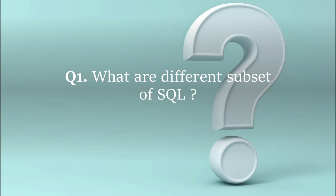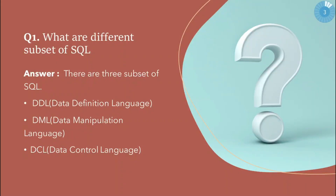The first question is: what are the different subsets of SQL? There are basically three subsets of SQL: DDL, DML, and DCL. There is also DQL, but if the interviewer asks you what are the subsets of SQL, you have to tell these three — they are the main subsets. DDL is Data Definition Language, DML is Data Manipulation Language, and DCL is Data Control Language.